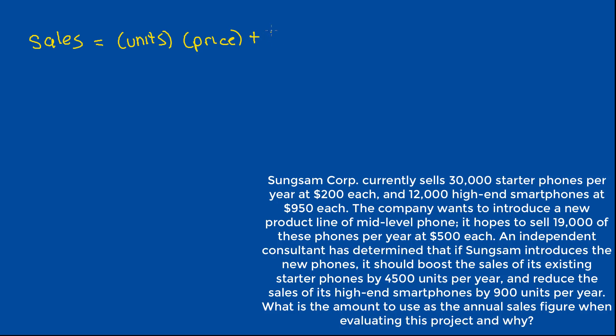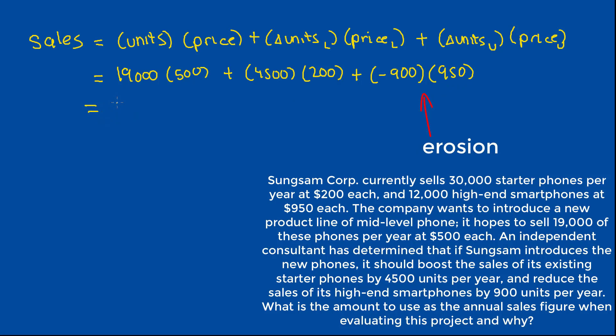So we would have to add in the effect on the starter phone. So we're just going to label that as L, the starter phone line where we actually increased our sales, and the smartphone line where we actually decreased our sales. So we're going to label that U for upper line, and times the price for the upper line. So we actually sell 19,000 of the product line that we're focusing on at a price of $500, and we sell 4,500 more starter phones at a price of $200. And we actually lose 900 units of sales in the smartphone category for $950 each. And multiplying those out and adding them up, we should get $9,545,000 in total sales.